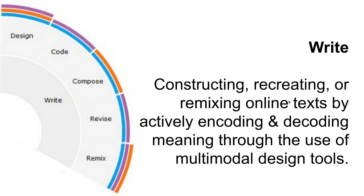So back to that academic jargon: writing or online content construction means constructing, recreating, or remixing online text. You could construct your own, recreate someone else's, or remix — take someone else's work, chop it into smaller pieces, and recreate something of your very own. This is all by actively encoding and decoding meaning. Encoding and decoding is basically taking a message, unpacking it, putting it into a form the individual can read and understand — or vice versa, taking a message you want to share and encapsulating it in a medium that makes it easier for others to comprehend.